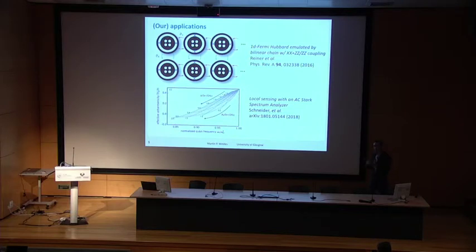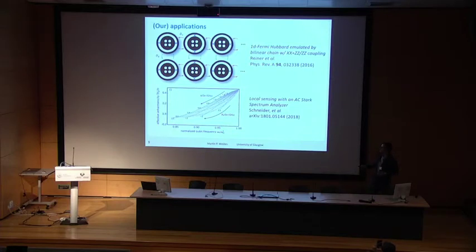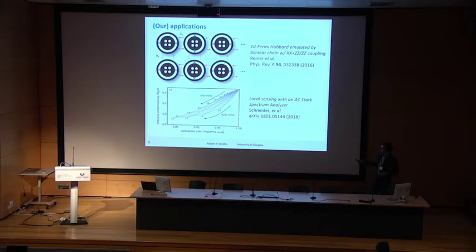This magnetic dipole can be coupled to a neighboring transmon, and thereby we are able to mediate ZZ interaction. For example, if we have a bilinear chain with Josephson junctions oriented along the horizontal axis, we have ZZ interaction along the vertical axis.